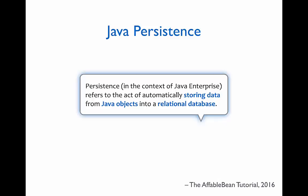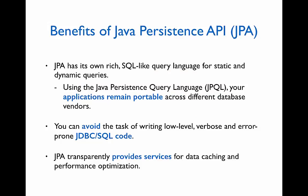The technique used to do this is called Object Relational Mapping, or ORM. Essentially, it allows your business logic to treat the data in your relational database as Java objects rather than database records. JPA has its own SQL-like query language that allows you to do both static and dynamic queries. One benefit of this is that it allows you to change database vendors without significantly changing your application code. When you're using JPA, you no longer have to use JDBC SQL code.